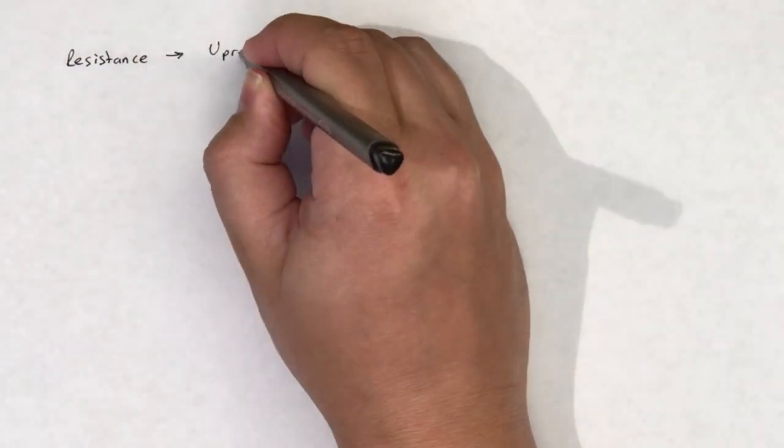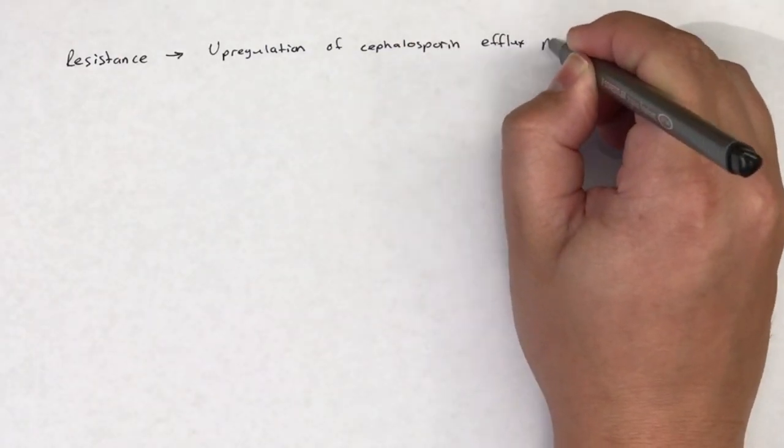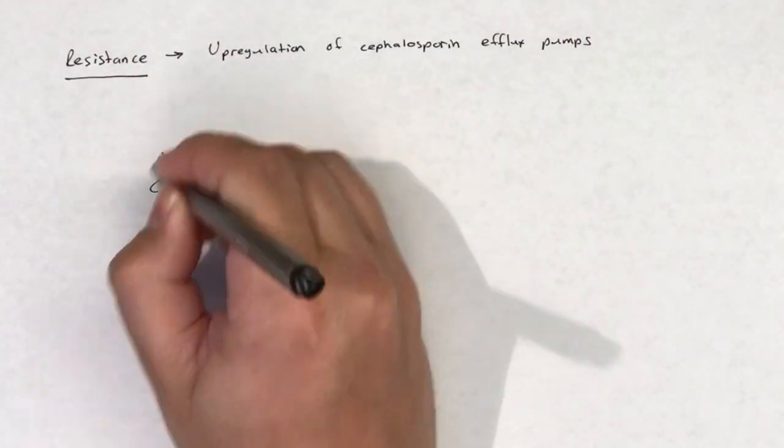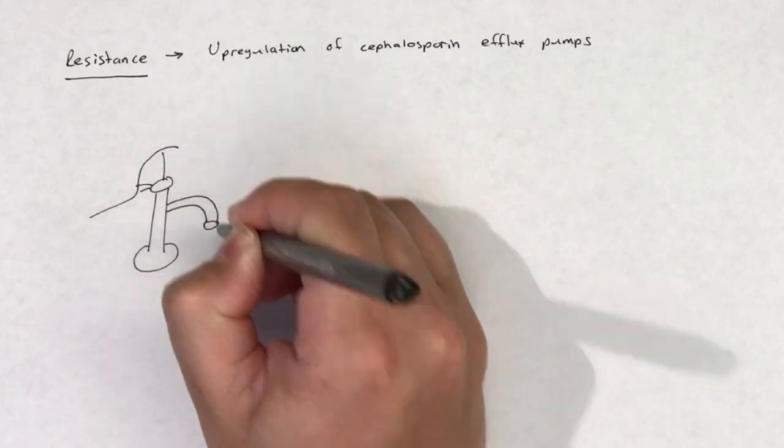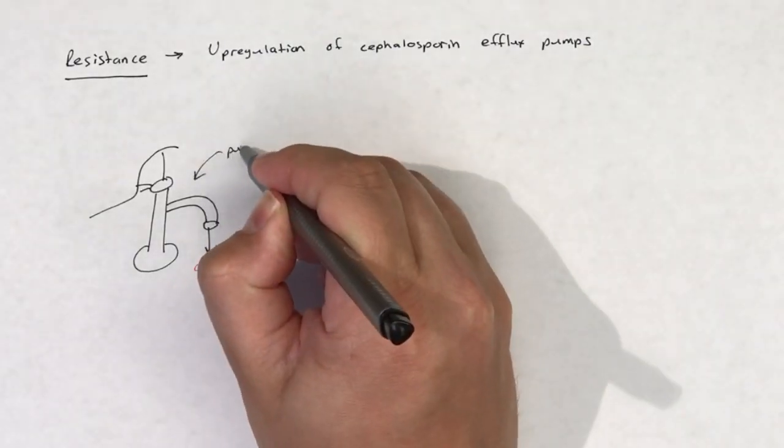The final method of resistance to cephalosporins is due to increased efflux of the cephalosporin itself. Some bacteria are able to upregulate efflux pumps that actively transport a cephalosporin out of the cell after it has entered.